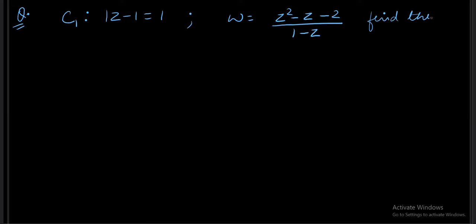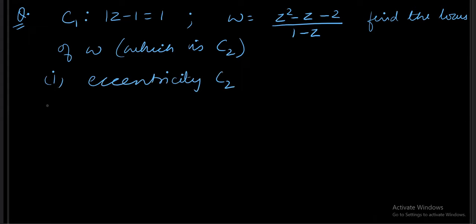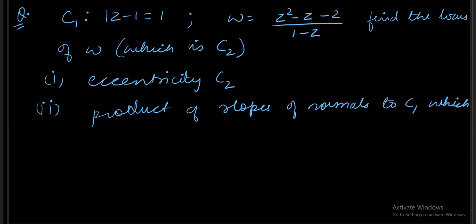Find the locus of omega which is C2, and also find eccentricity of C2. Secondly, also find product of slopes of the normal to C1 which touches C2.